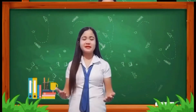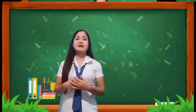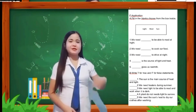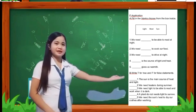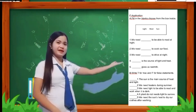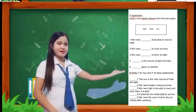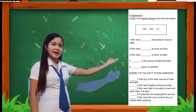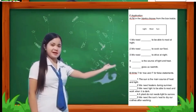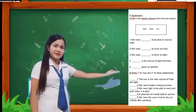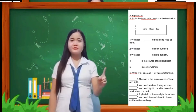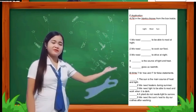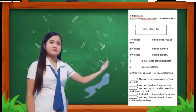Now that I see that all of you understand our lesson for today, get your paper and we will have one activity. This is your activity for today. We have Activity A and Activity B. In Activity A, all you need to do is to choose your answer from the box. In Activity B, all you need to do is to write letter T if it is true and write letter F if the statement is false.